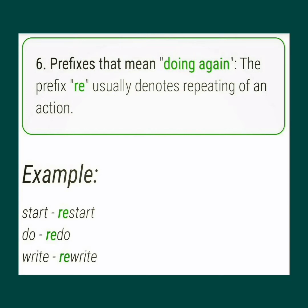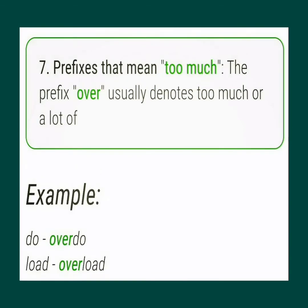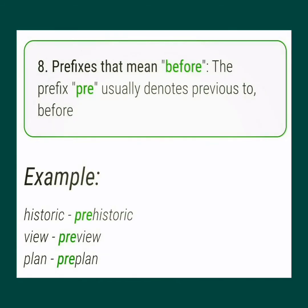Ocean → mid-ocean. Prefixes that mean 'doing again': the prefix re- usually denotes repeating of an action. Examples: start → restart, do → redo, write → rewrite. Prefixes that mean 'too much': the prefix over- usually denotes too much or a lot of. Examples: do → overdo, load → overload.